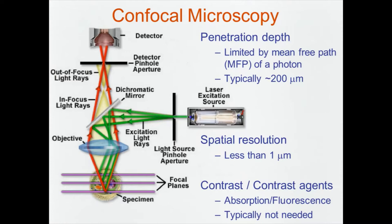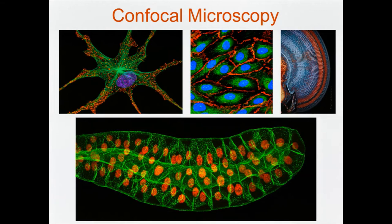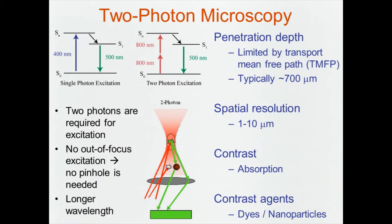Confocal microscopy is a fantastic technology with very high spatial resolution. The penetration depth is unfortunately limited, typically in the 100 to 200 micron range, limited by the mean free path propagation of a photon — the path until the photon encounters a scattering event. Tissues are extremely scattering, generally speaking. Contrast is based on absorption and fluorescence, which is very rich in terms of tissue. Stunning quality images can be obtained without necessarily using contrast agents.